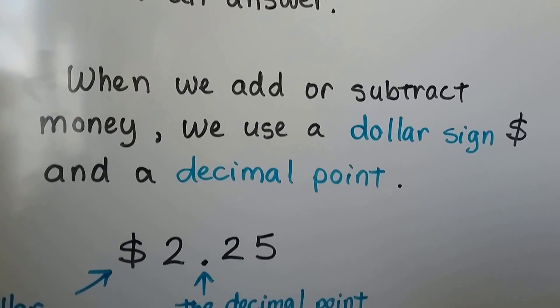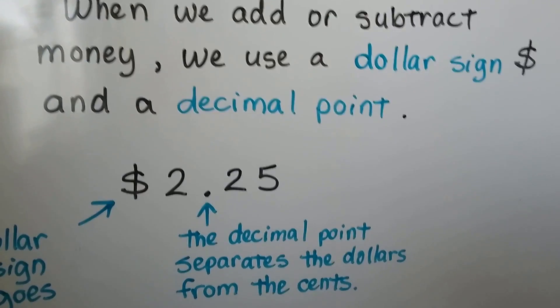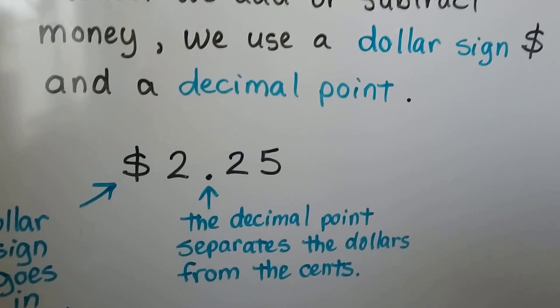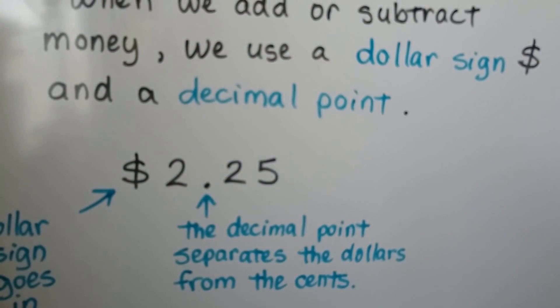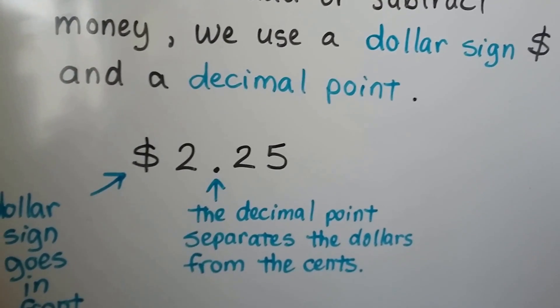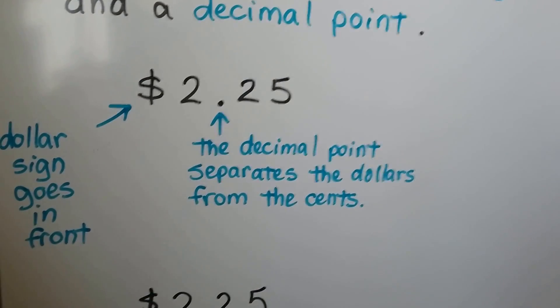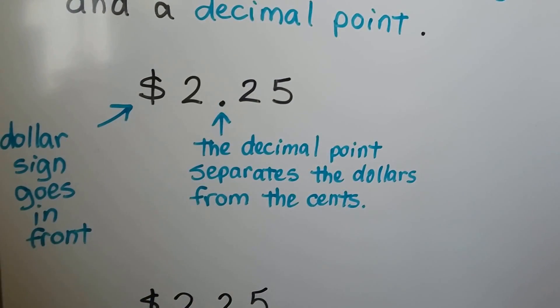When we add or subtract money, we use a dollar sign. It's the S with the line going through it, like this. And a decimal point. It's this little period right here. And the dollar sign goes in front of our answer.